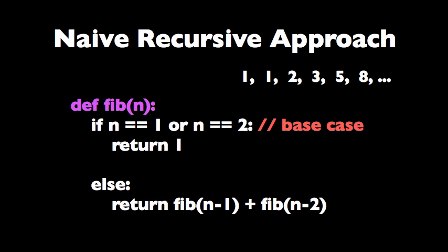The most naive approach we can think of for this problem is a recursive one. In this code, I'm defining my function fib, and if n is equal to 1 or 2, we just return 1, which is the base case, and that corresponds to the first two elements.